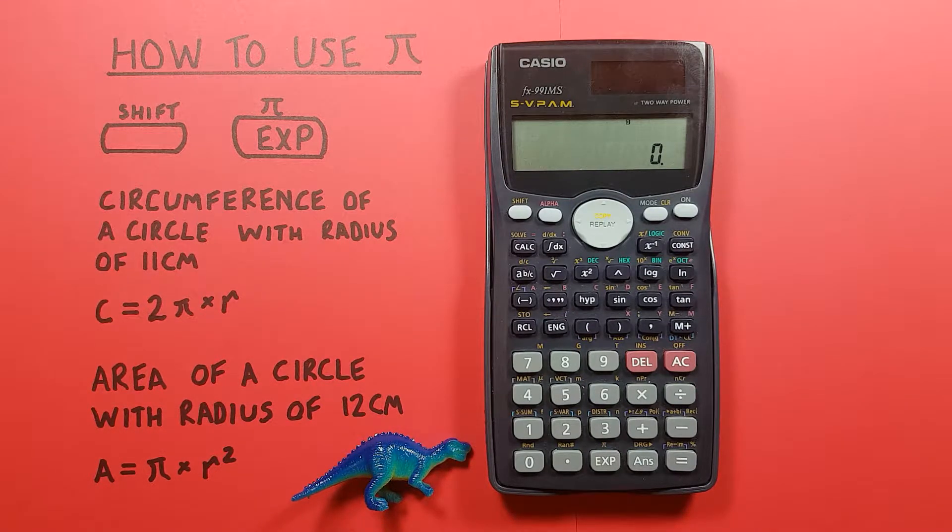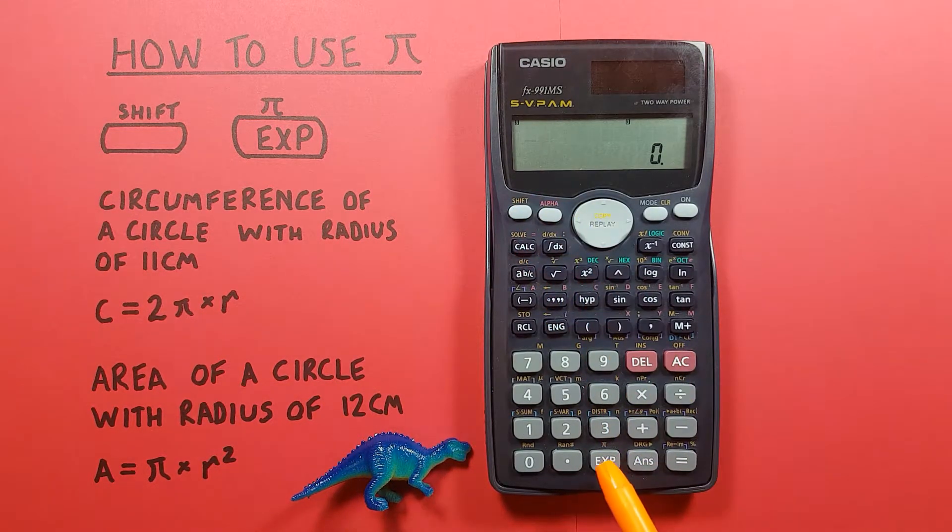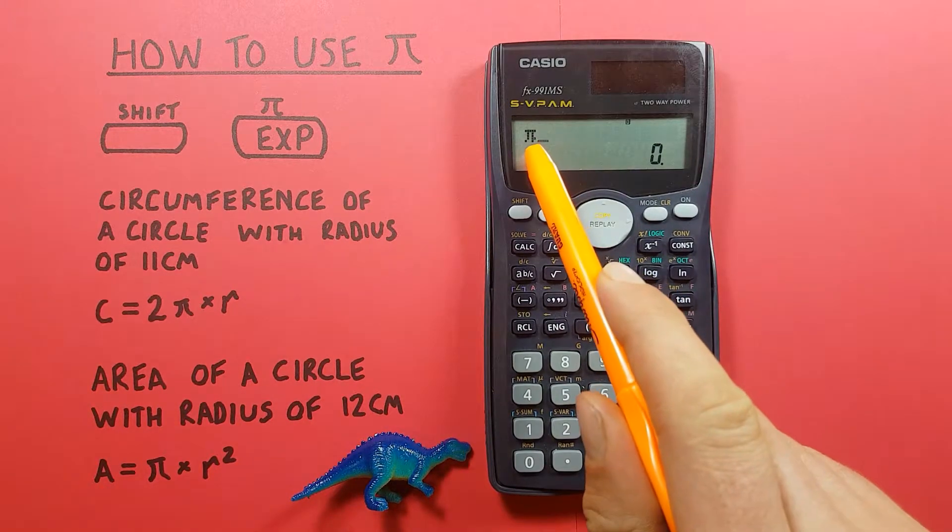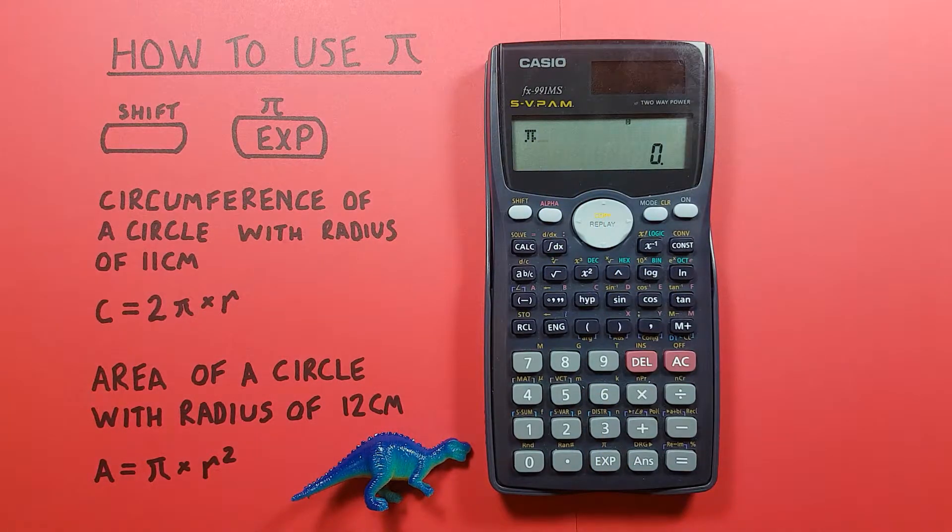So if we just want to put PI on the screen we can press shift exp and there you see we have PI on our screen. So we can use this to solve a lot of different equations.